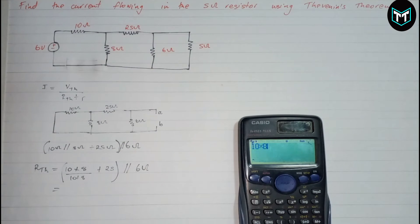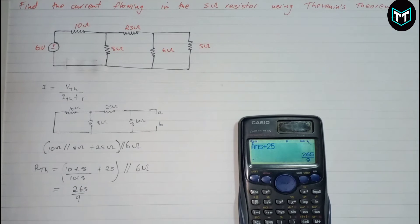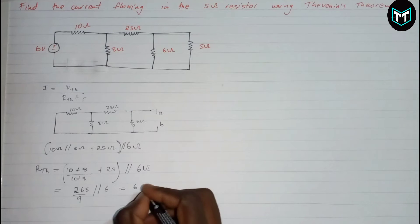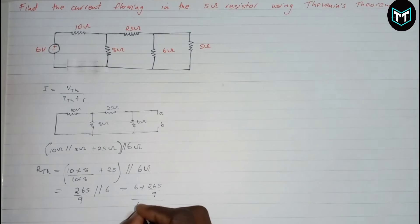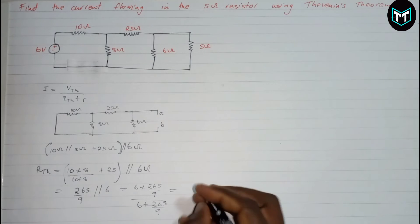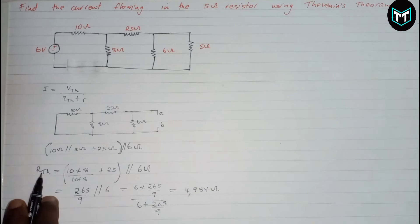So 10 times 8 gives us 80 divided by 18, plus 25, which gives us 265 over 9. And 265 over 9 is in parallel with the 6 ohm resistor. So for that parallel combination it's going to be 6 times (265/9) divided by 6 plus (265/9), and the Thevenin resistance is equal to 4.984 ohms.